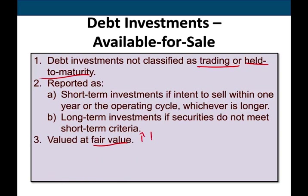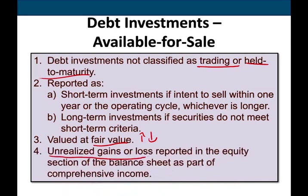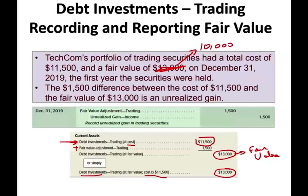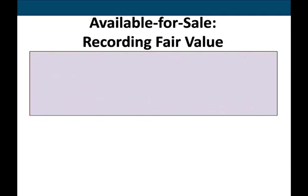We have to write it up or write it down — similar to trading, but with a key difference. Any unrealized holding gain or loss is reported in the equity section of the balance sheet as part of other comprehensive income, not on the income statement. So the difference between trading and available-for-sale is where the unrealized holding gain or loss is recorded: income statement for trading, equity section for available-for-sale.